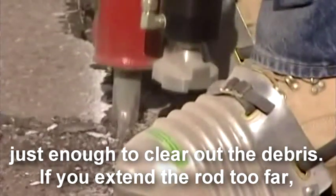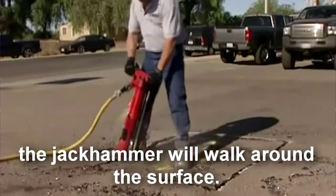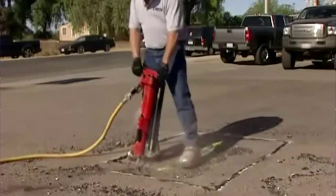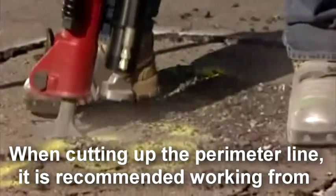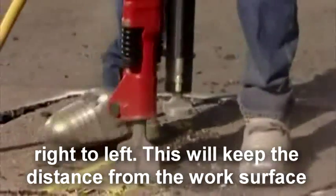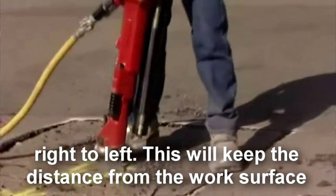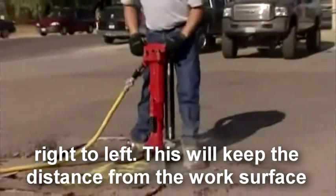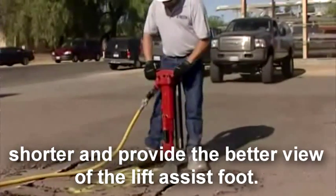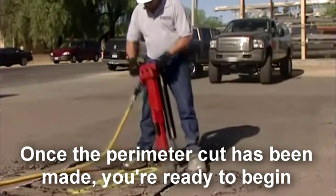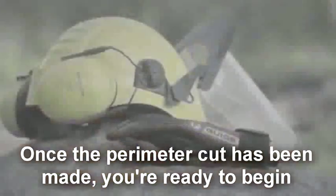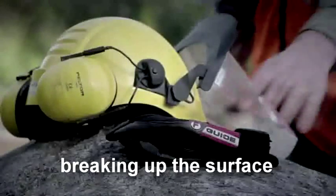If you extend the rod too far, the jack hammer will walk around the surface. When cutting up a perimeter line, it is recommended to walk from right to left. This keeps the distance from the work surface shorter and provides a better view of the lift assist foot. Once the perimeter cut has been made, you are ready to begin breaking up the surface.